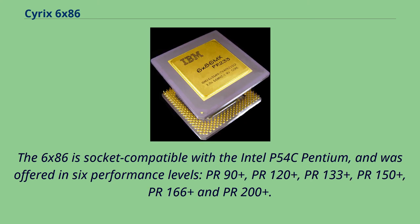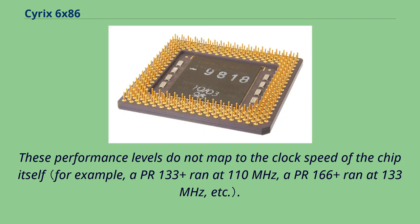The 6x86 is socket-compatible with the Intel P54C Pentium and was offered in six performance levels: PR90+, PR120+, PR133+, PR150+, PR166+, and PR200+. These performance levels do not map to the actual clock speed of the chip itself.